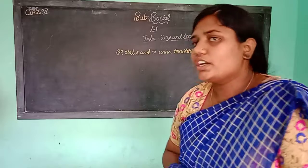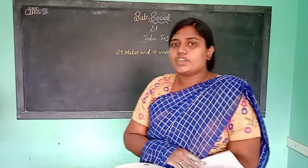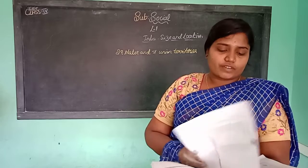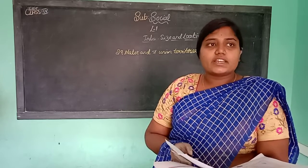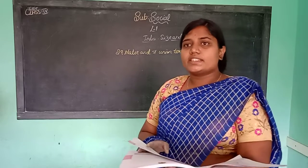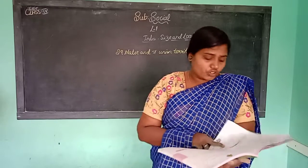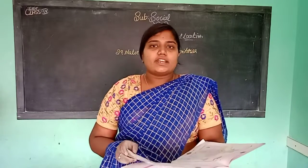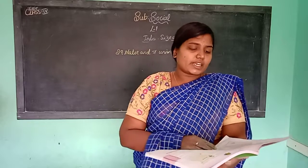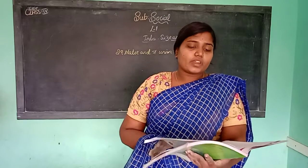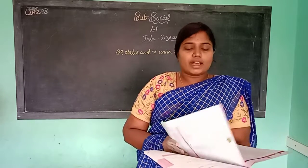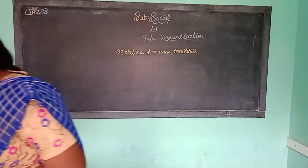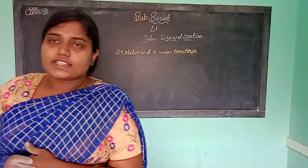In this class we learned about the six physical divisions and where they are situated. There are 29 states and 7 Union Territories. We also learned states and their capitals.